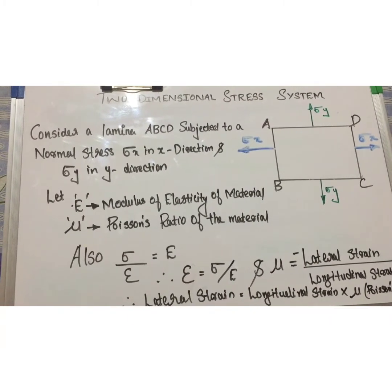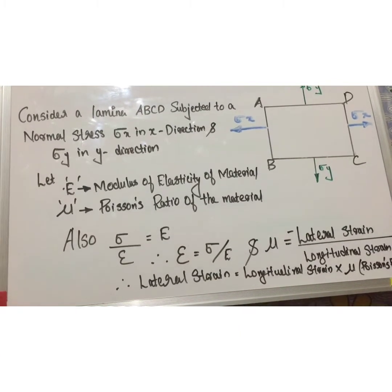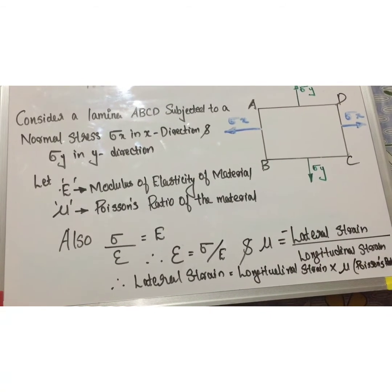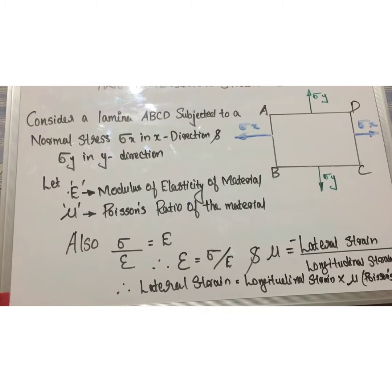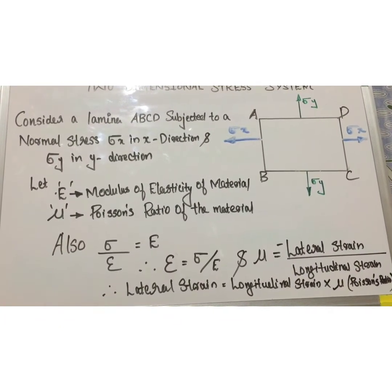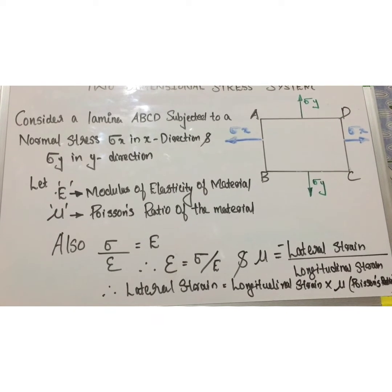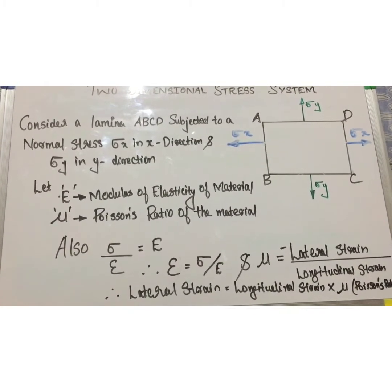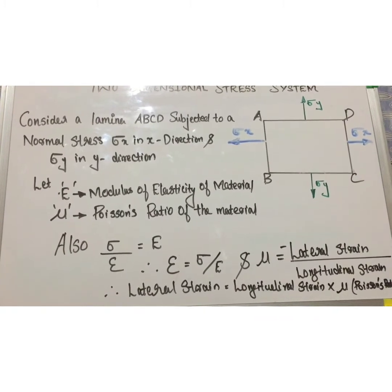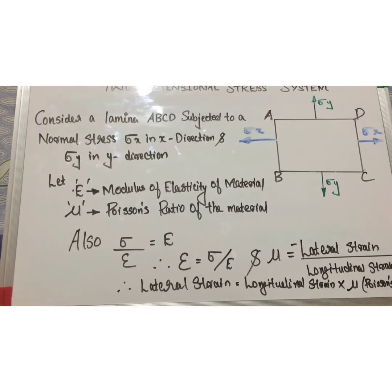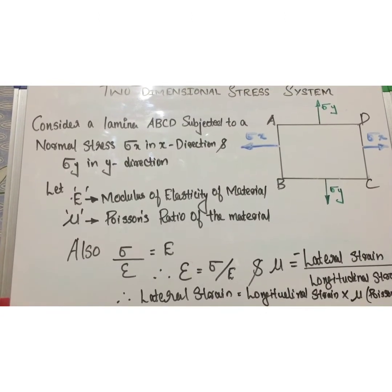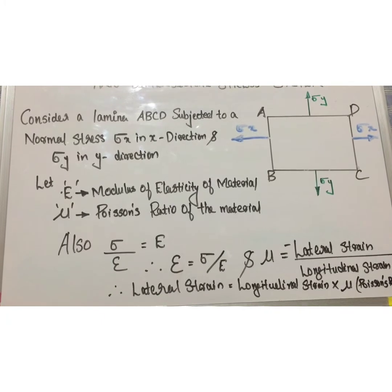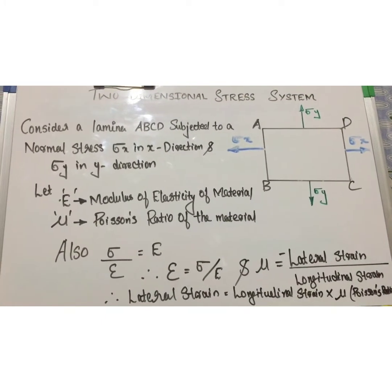We know that stress divided by strain is a constant, that is the modulus of elasticity. That is, sigma over epsilon is equal to E. Therefore, strain is equal to stress divided by modulus of elasticity. Poisson's ratio is the negative ratio of lateral strain to that of longitudinal strain, which equals the negative of longitudinal strain multiplied by Poisson's ratio.